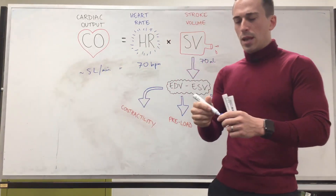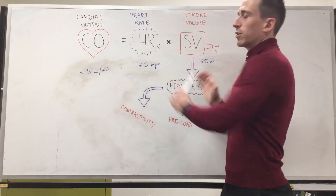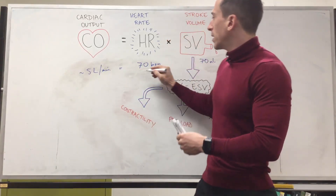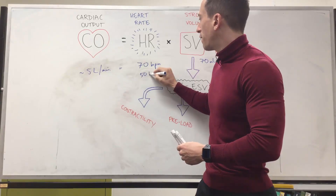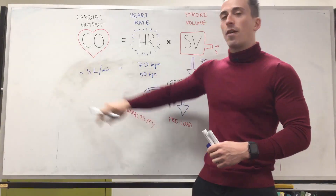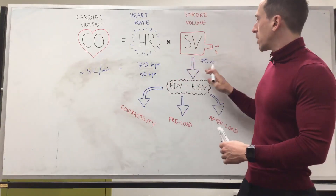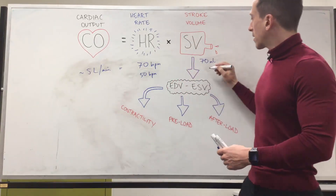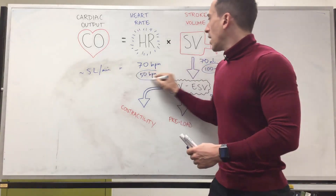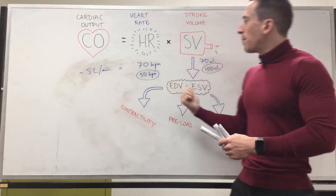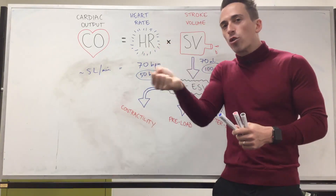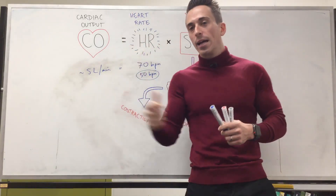These values are the average. For athletes, heart rate is significantly lower — around 50 beats per minute. So in order for them to pump out 5 litres a minute, their stroke volume must be higher, and it is — around 100 mils. This means the heart becomes more efficient: fewer beats, but with every contraction more blood is ejected out.